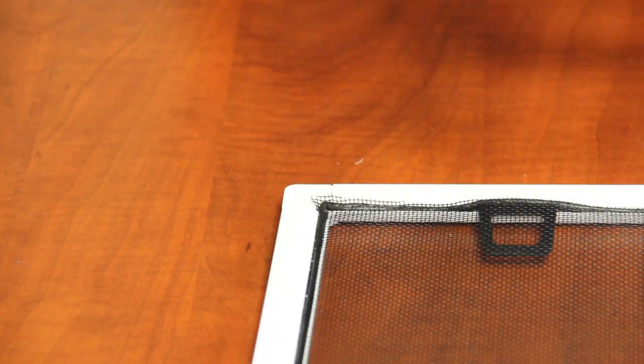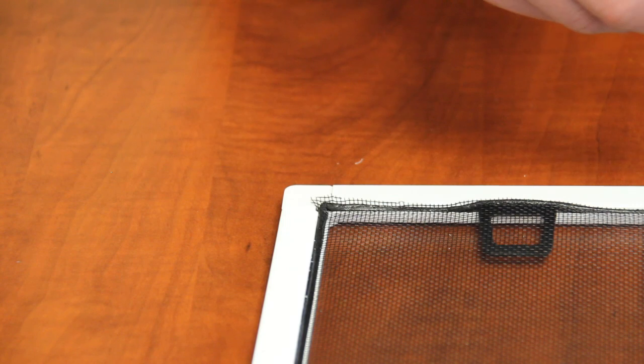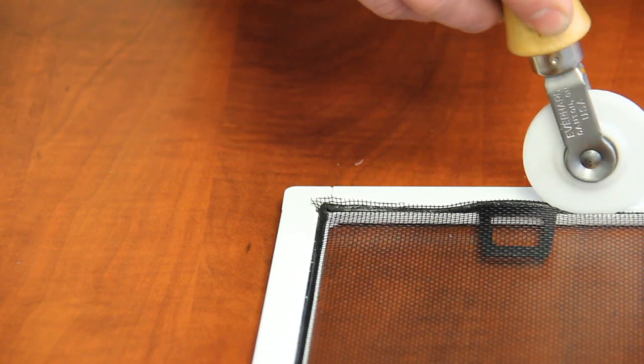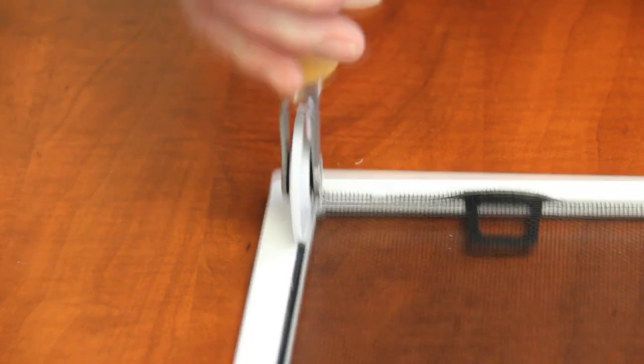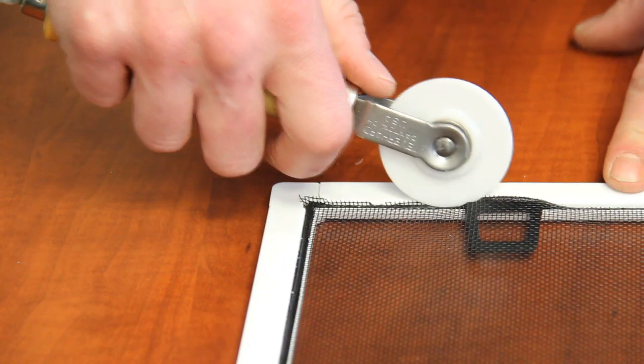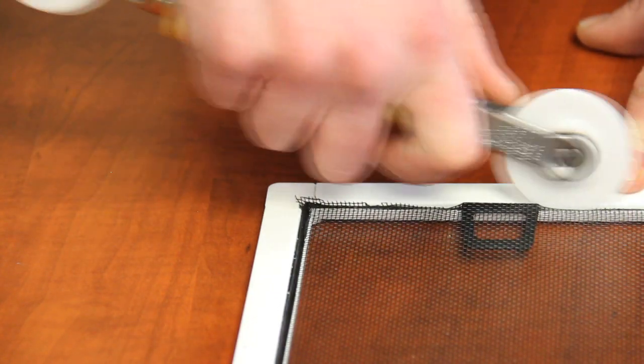place. Take your roller and roll the spline in tight. Pay extra attention to where your tab is to make sure you get the spline in tight, so you don't pull the screen tab out when you reinstall it.